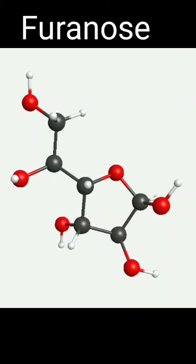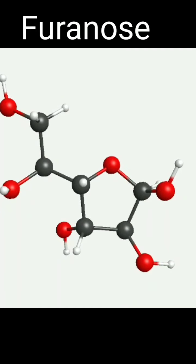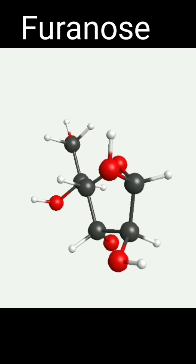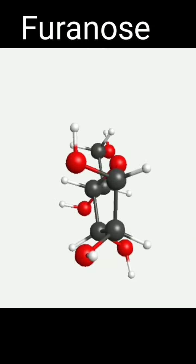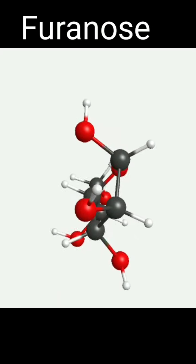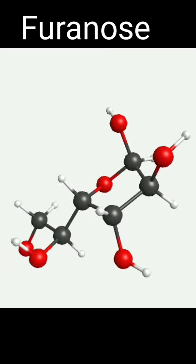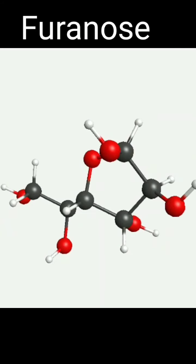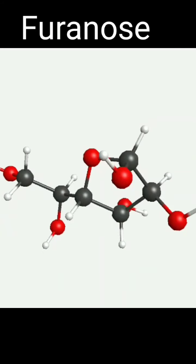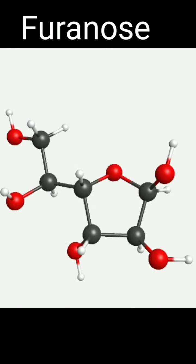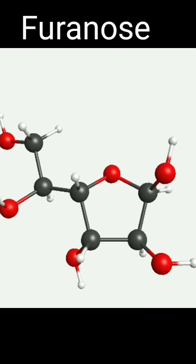This is a furanose structure, which is a 5-membered ring structure — one oxygen and four carbons — with carbon number 5 and carbon number 6 outside the ring structure. This is a furanose ring structure, which is less stable than the pyranose structure.